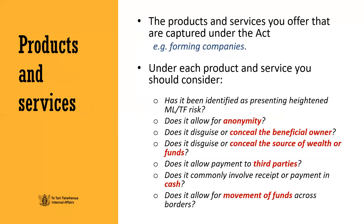Products and services. You will need to consider all the products and services you offer that are captured under the Act, for example, forming companies. Under each product and service you should consider: has the product or service been identified as presenting heightened money laundering or terrorism financing risk? You may find this in the sector risk assessment or other guidance. For example, for lawyers, the sector risk assessment has identified the products and services of the legal sector as high risk, stating there are certain vulnerabilities in the purchase and sale of real estate, the formation, merger and acquisition of companies, and the formation of trusts and providing trust services. If you are a law firm which offers all of these services, you may conclude that your products and services risk is also high.